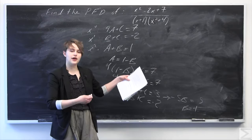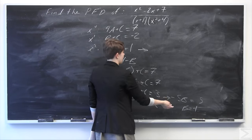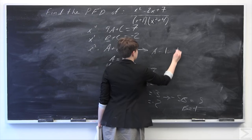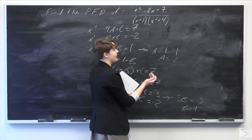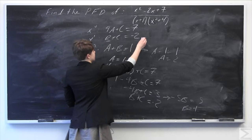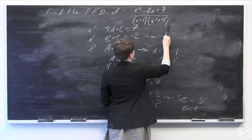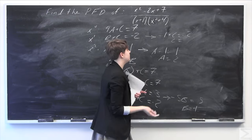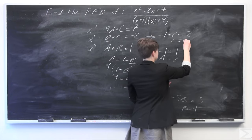Now plugging b equals negative 1 back in: from a plus b equals 1, we get a minus 1 equals 1, so a equals 2. For c, using b plus c equals negative 2 with b equals negative 1: negative 1 plus c equals negative 2, so c equals negative 1.